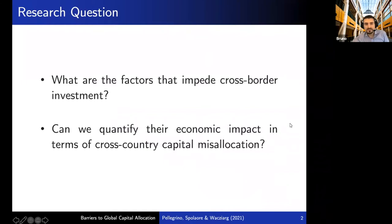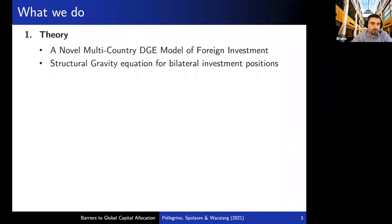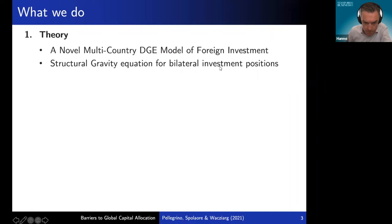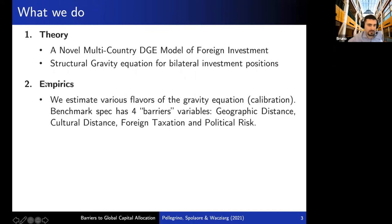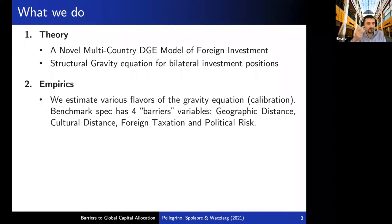To answer this question, we do a number of things. First, we do some theory. I'm going to present a novel multi-country dynamic general equilibrium model for investment. This model produces a structural gravity equation for bilateral investment positions between countries. Our benchmark specification has four variables capturing barriers to foreign investment: geographic distance, cultural distance, foreign taxation, and political risk. These four barriers are going to capture a good deal of variation in foreign investment.